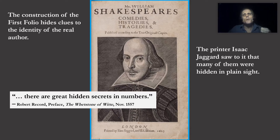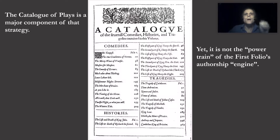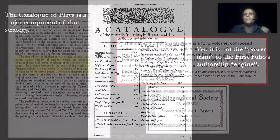As Robert Record said in The Whetstone of Wit from 1557, there are great hidden secrets in numbers, and it is in numbers that we find many clues. The catalogue of plays — the table of contents — is a major component of that strategy, yet it is not the powertrain of the folio's authorship engine.